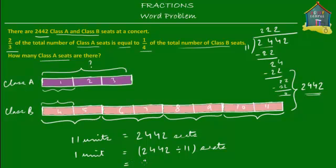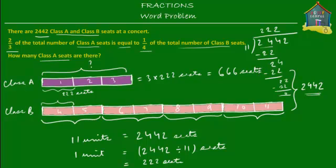So 1 unit is equal to 222 seats. Then how many Class A seats are there? Well, 3 times 222 because there are 3 units. So Class A seats equal 3 times 222, which is 666 seats. There are 666 Class A seats at the concert.